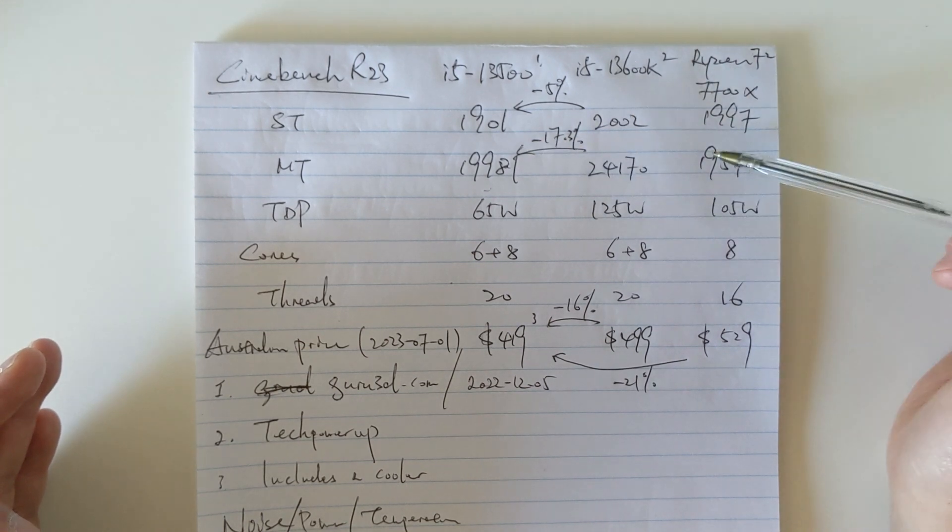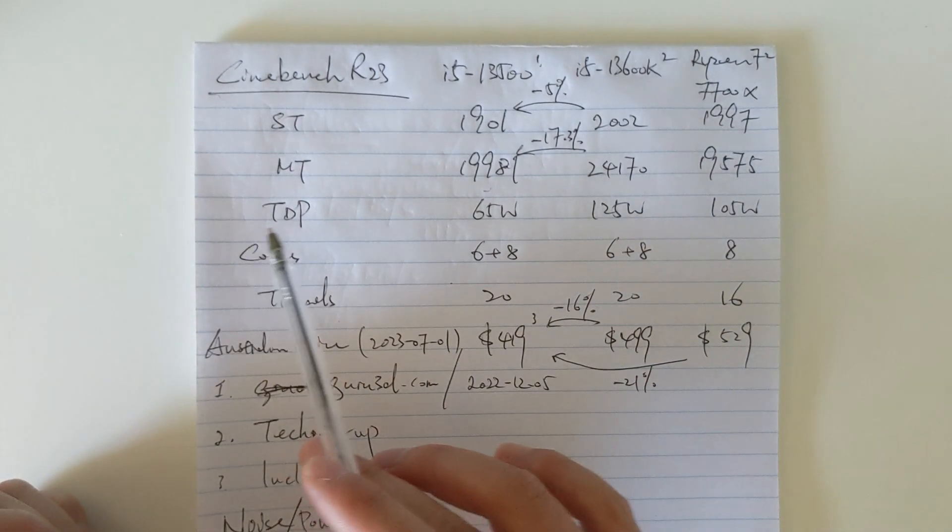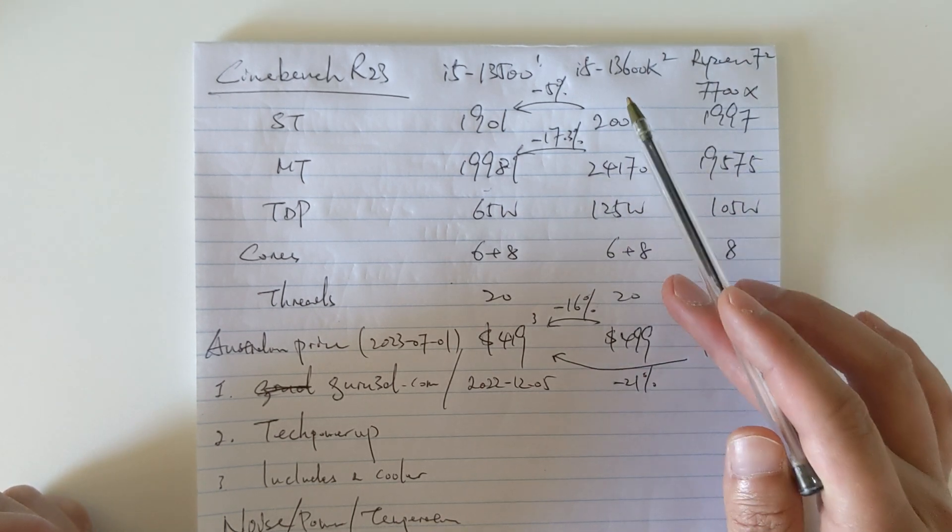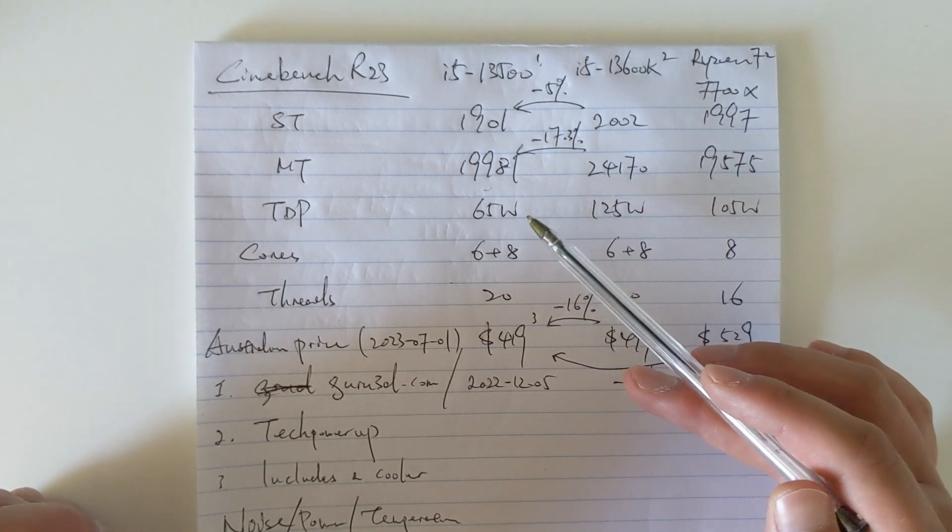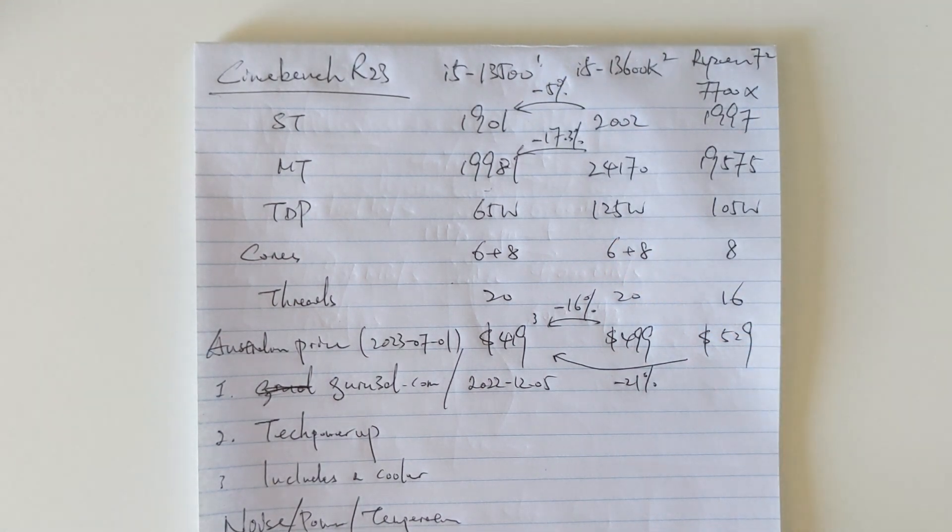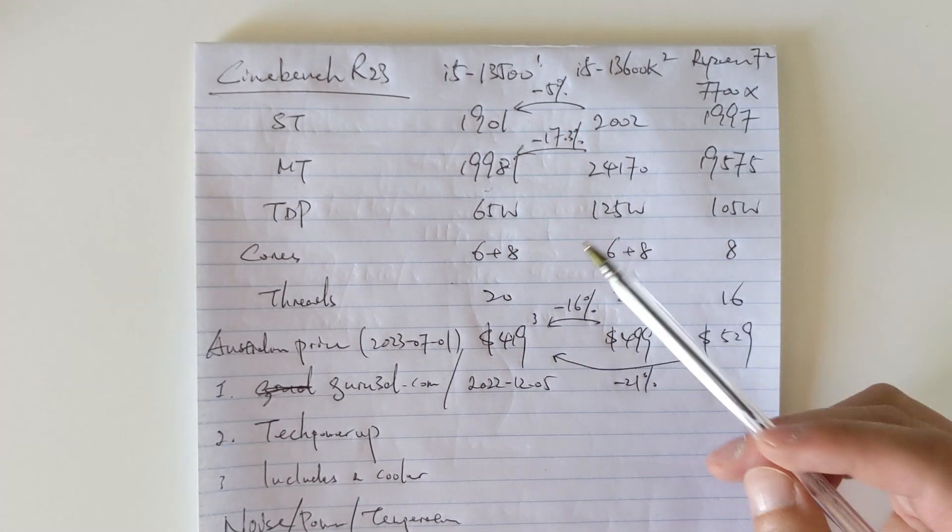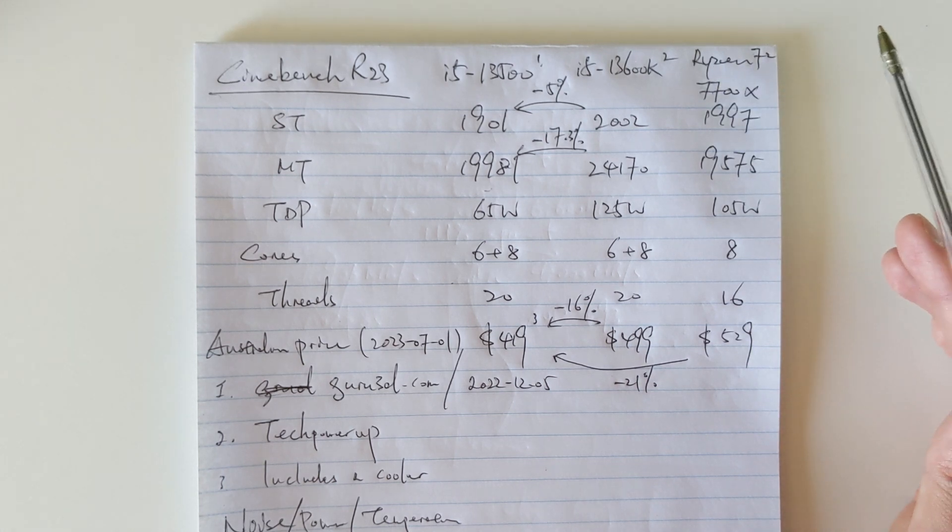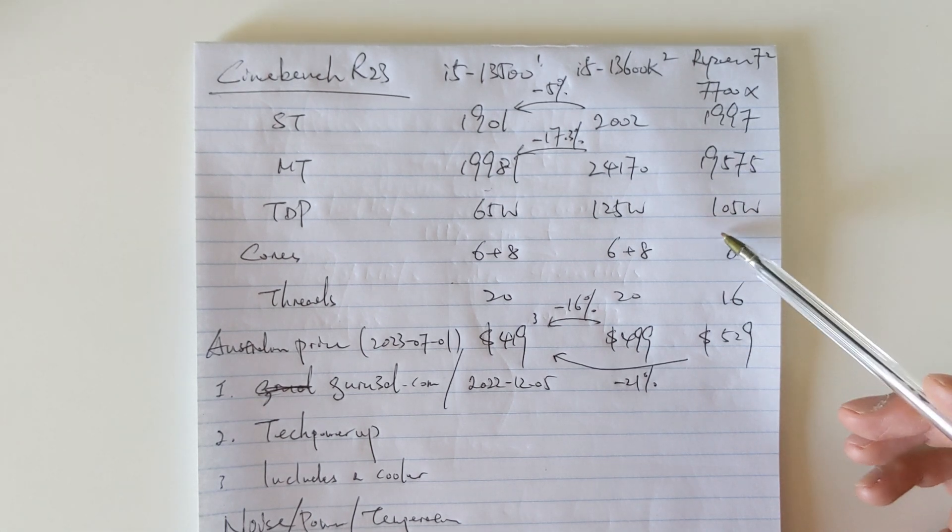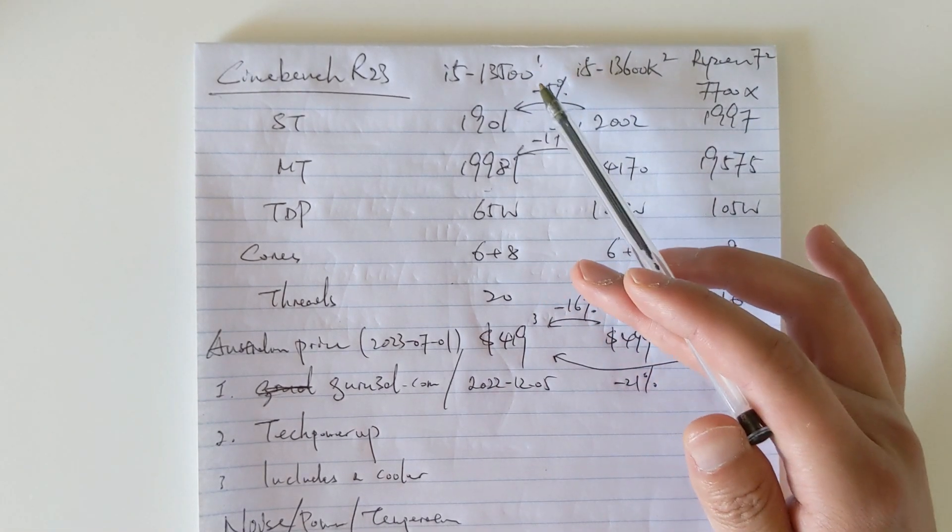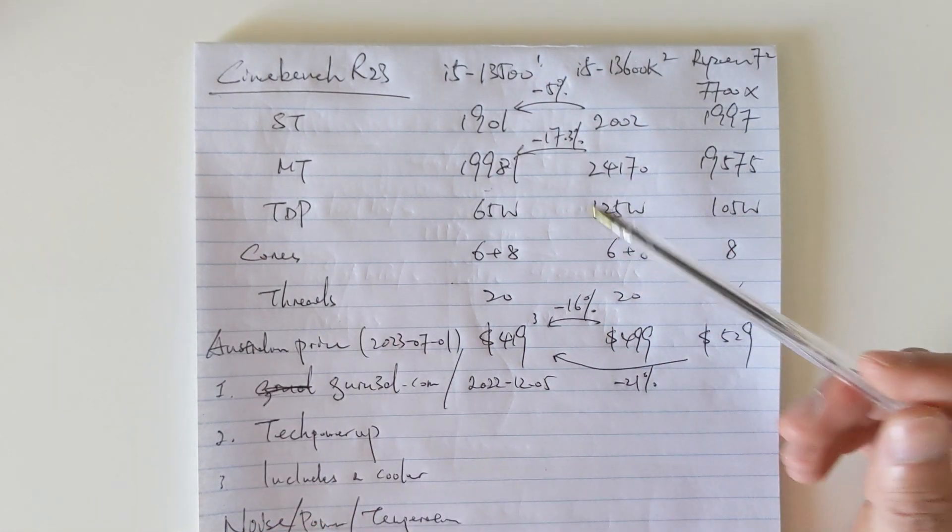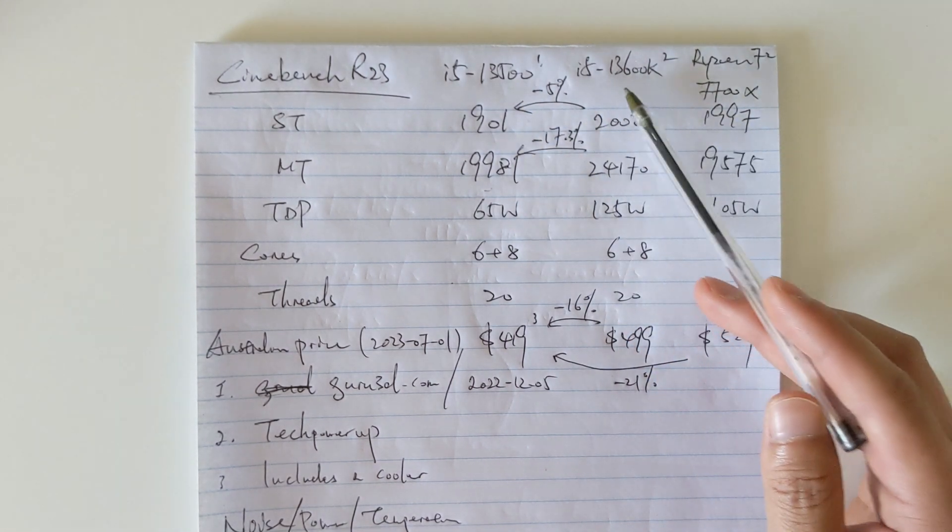In terms of TDP, the 13500 is half of the TDP of 13600K, which is nice. That's why when I installed 13500 on my wife's system, I did not change any power setting, so it should just work because by default it uses low power. With the Ryzen, the TDP is 105 watts, so it's higher than 13500, but performance is roughly similar to 13500.